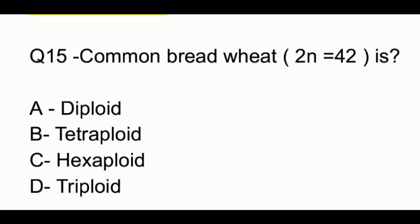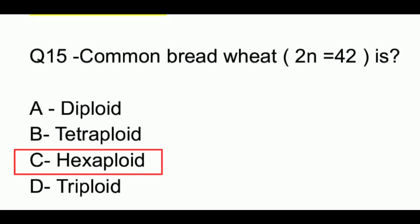Question number 15. Common bread wheat, which is 2N = 42, is: option A, diploid; option B, tetraploid; option C, hexaploid; option D, triploid. The answer to this question is option C, which is hexaploid.